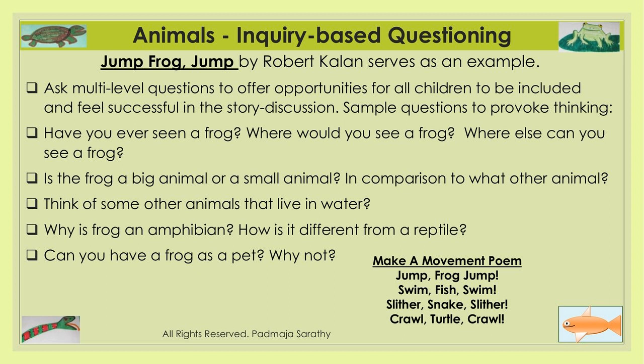Ask questions from easy complexity — yes or no questions, or pointing to answers from three choices — up to open-ended questions. For example: I'm thinking of an animal that is a reptile and will be in this story — what animal is it? At a higher complexity level, ask: I'm thinking of an animal in this story that is an amphibian — who can tell me which animal? They have to really think. Then you can ask even more complex questions — what is an amphibian? How is it different from a reptile?